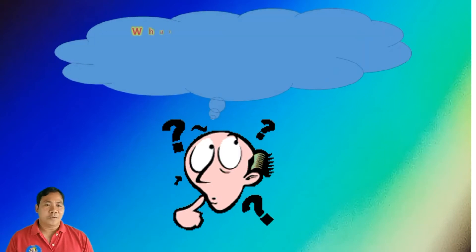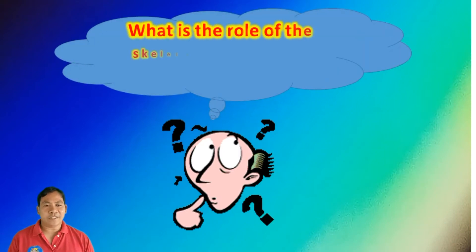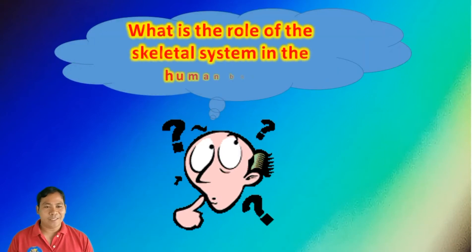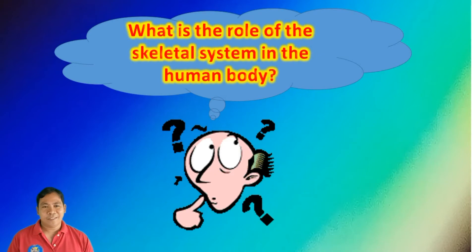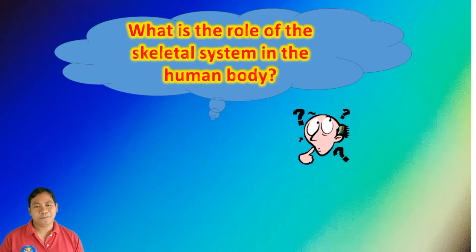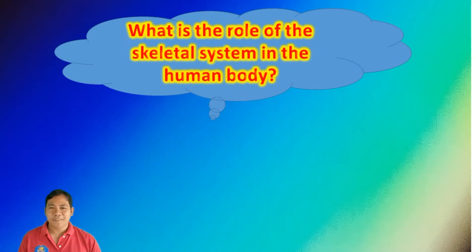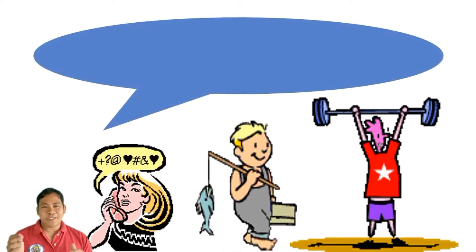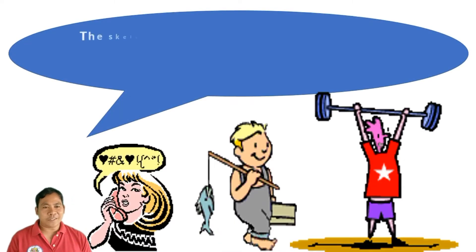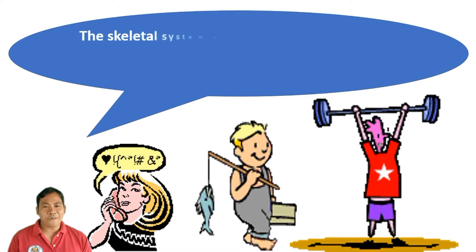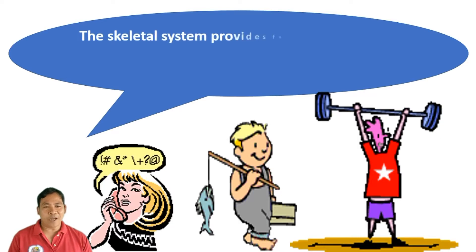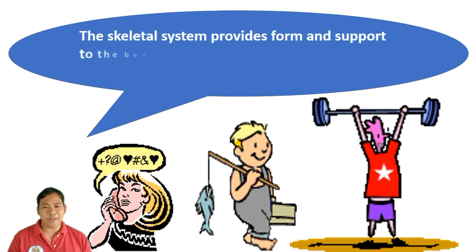What is the role of the skeletal system in the human body? The skeletal system provides form and support to the body.